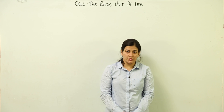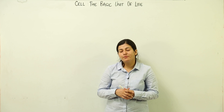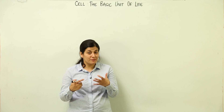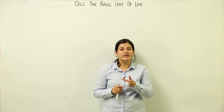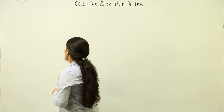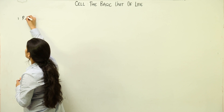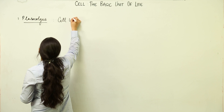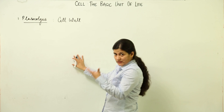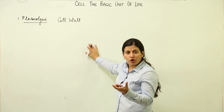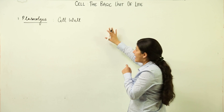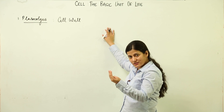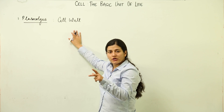In continuity to the previous lesson, we are going to get introduced to two new terms. The first one is plasmolysis, and the second one is the types of cells on the basis of the nucleus present inside. We did talk about the cell wall present in plant cells — that is how plant cells are distinguished from animal cells. Try to recall how many types of cells there are on the basis of the nucleus.